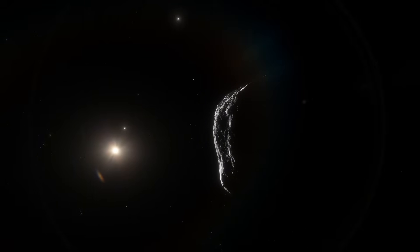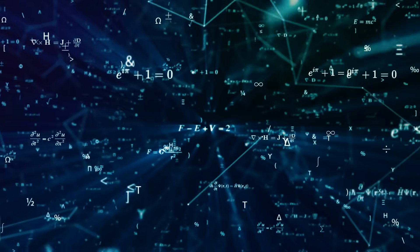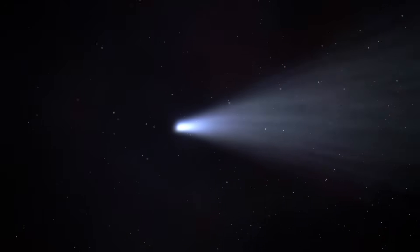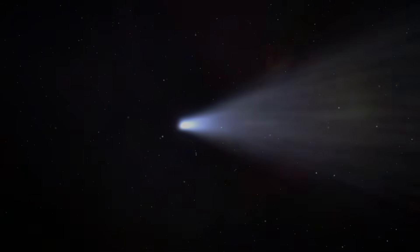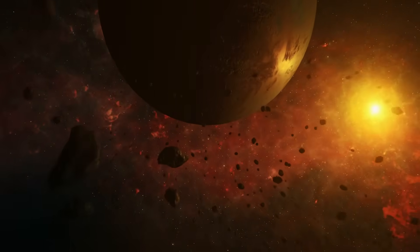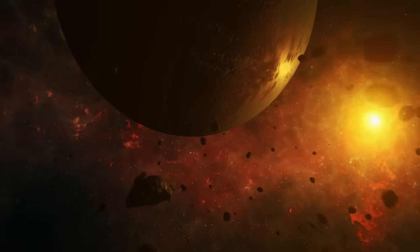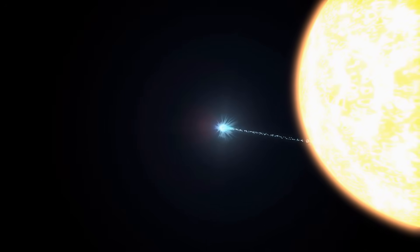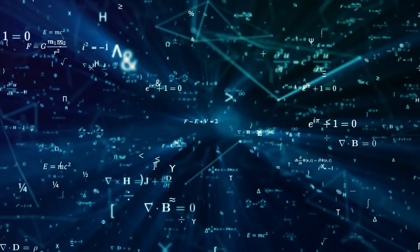But in a twist that feels almost scripted, we won't see a thing. In what is either a case of monumental cosmic bad luck, or perhaps perfect strategic planning, 3I Atlas will make its closest, most critical pass while it is on the complete opposite side of the star from Earth. For several agonizingly long weeks, it will be totally lost in the sun's blinding glare, a period scientists call conjunction.